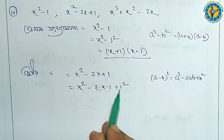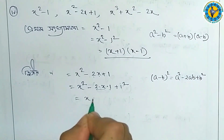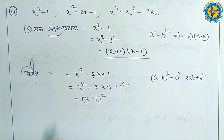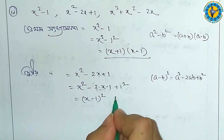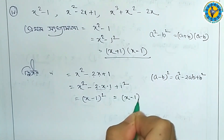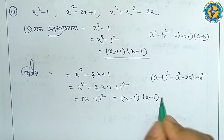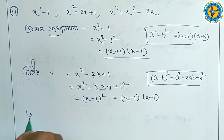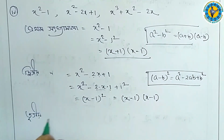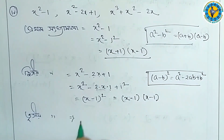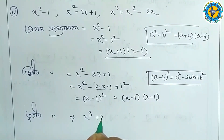This is equal to x into x minus 1. The result is equal to x cubed plus x minus 1.